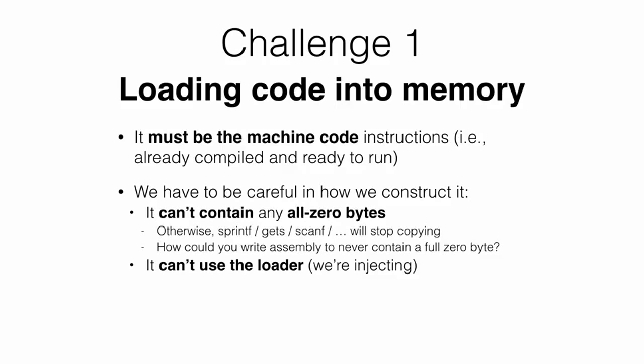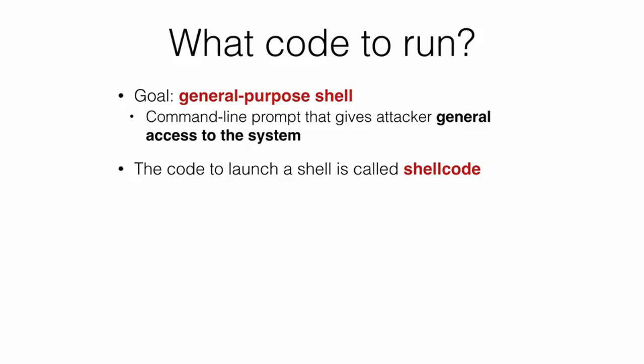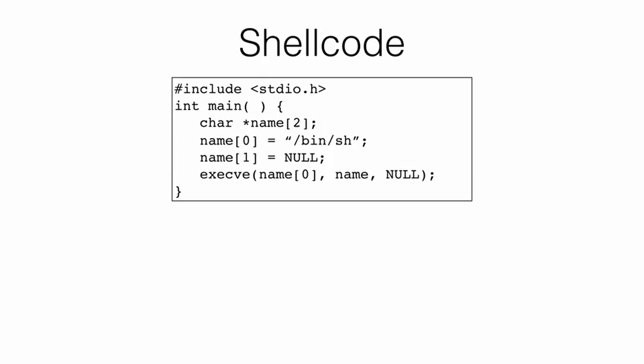The Heartbleed bug is a high-profile example of a buffer overread discovered in early 2014, estimated to affect nearly 600,000 servers on the internet. The bug was in the implementation of the so-called heartbeat functionality of the SSL protocol. This functionality allows a client to send a heartbeat message to the server asking it to respond to confirm the connection is still active. The heartbeat message contains a length field indicating the length of the portion of the message to echo back.